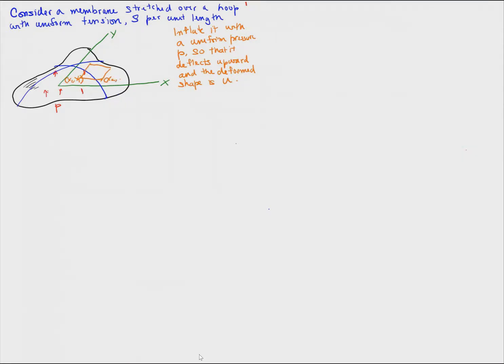Consider a patch of the membrane between X1, Y1, and X2, Y2, and let's look at a free body diagram of this patch in the inflated configuration. So let's take the patch and the deflected shape of the membrane over the patch.